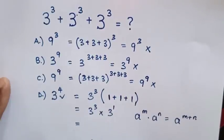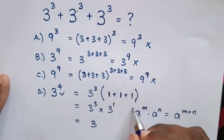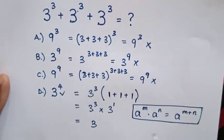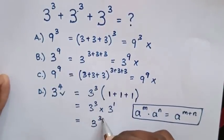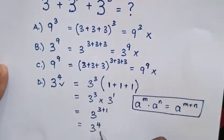So it will equal 3 to the power of... here we have addition of powers. So we add the powers: 3 + 1, which equals 3⁴.